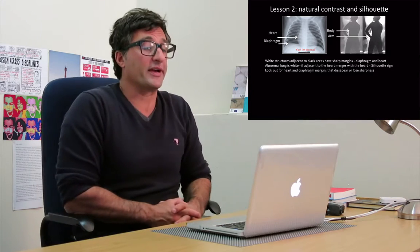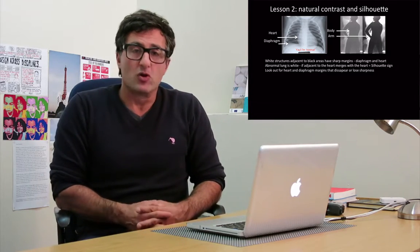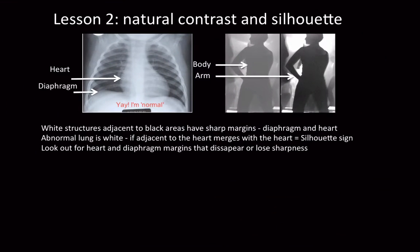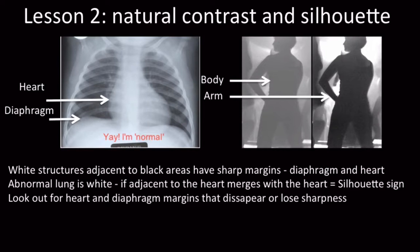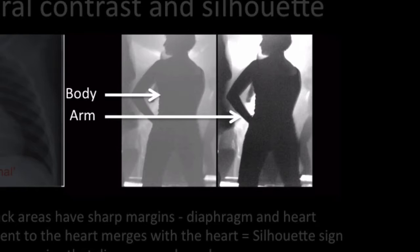The next lesson is a spin-off of that but a little more complicated. People talk about a silhouette sign, and it's difficult to conceive what they mean when they talk about an outline — like a lady silhouette or a shadow, which is what we refer to when we talk about an x-ray shadow. Now you can see two different levels of contrast — the natural distinction between black and white — and when there is a white structure next to a black structure, the margin between them is very clear.